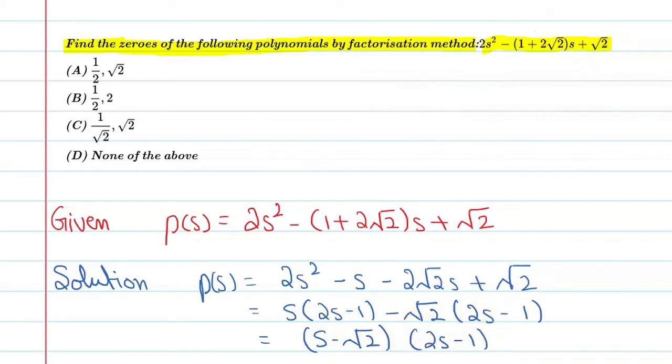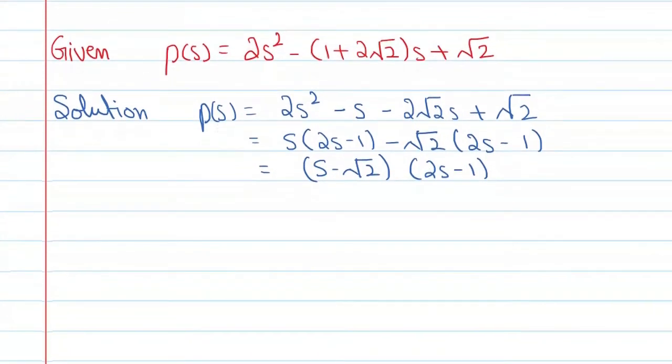Now equate these linear polynomials one by one to zero. So you can say s - √2 = 0, so s = √2. And 2s - 1 = 0, so s = 1/2.